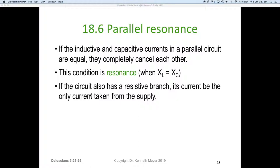If the inductive and capacitive currents in a parallel circuit are equal, they completely cancel each other out. This condition is called resonance. It's when XL and XC equal each other, and that's always going to happen at a particular frequency called the resonant frequency.